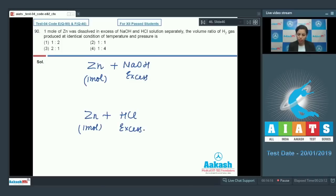The question is the volume ratio of hydrogen gas produced at identical conditions of temperature and pressure. Here is the reaction: Zn + 2NaOH → Na2ZnO2 + H2. Similarly, if I talk about this, Zn + 2HCl → ZnCl2 + H2. If you look at these reactions, one mole of zinc is producing one mole of H2.